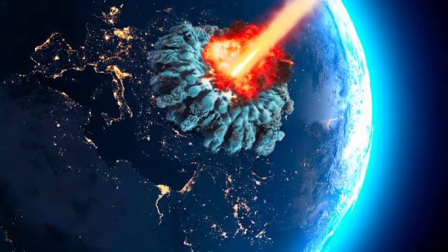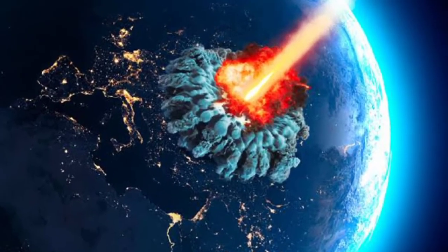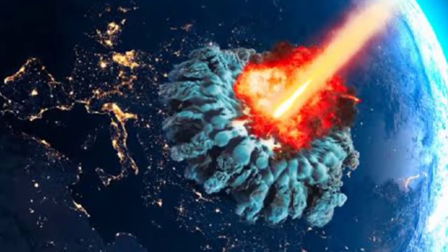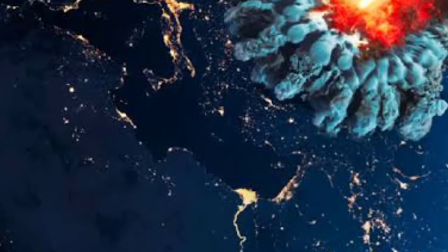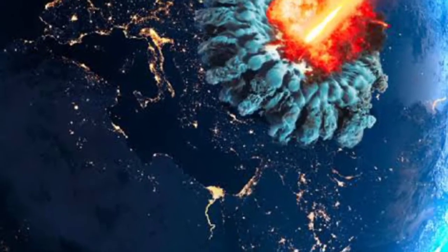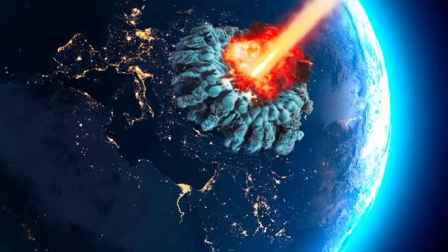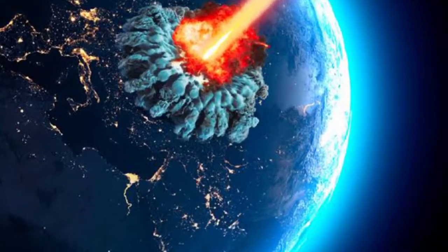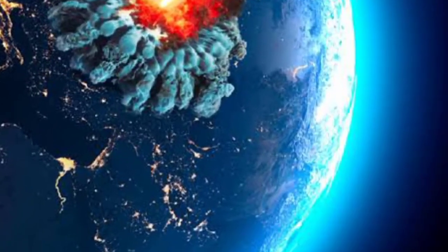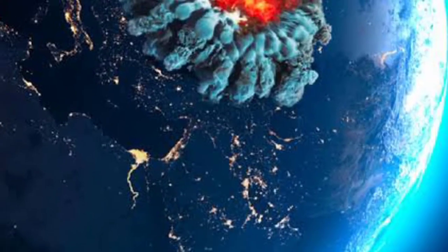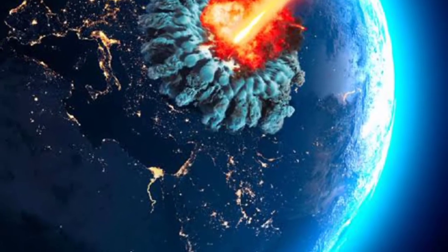Potentially hazardous asteroids, or PHAs, are currently defined based on parameters that measure the asteroid's potential to make threatening close approaches to Earth. Specifically, all asteroids with a minimum orbit intersection distance of 0.05 AU or less are considered PHAs, NASA said in a statement.